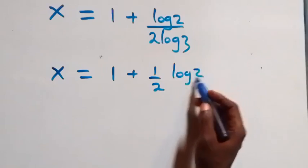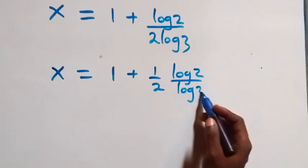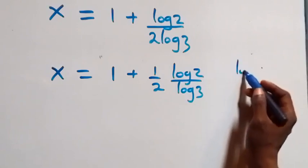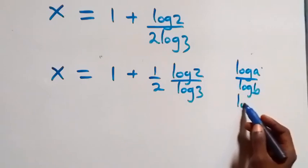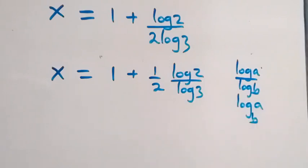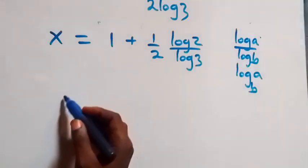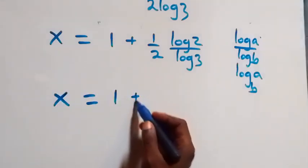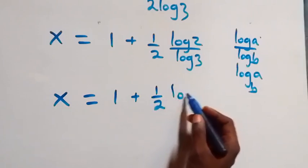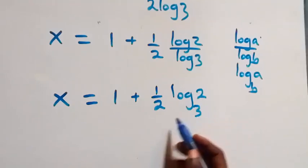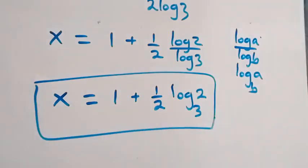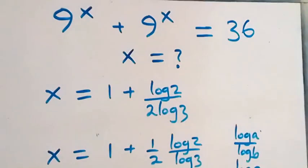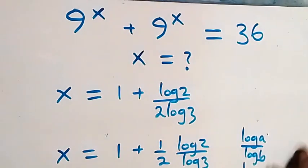We can write this as x equals 1 plus one-half multiplied by log 2 over log 3. Applying the change of base formula, where log a over log b equals log base b of a, this gives x equals 1 plus one-half times log₃2. So the value of x is 1 plus ½·log₃2. Now let's check if this satisfies the given problem by substituting the value of x back in.